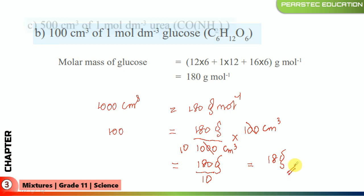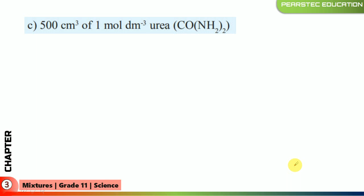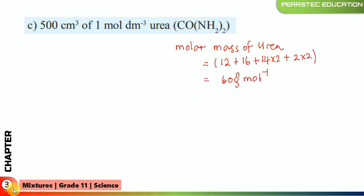The next example is 500 cubic centimeters of a 1 mol per cubic decimeter urea solution. The molar mass of urea is calculated as: carbon = 12, oxygen = 16, nitrogen = 14 × 2 = 28, hydrogen = 1 × 4 = 4. The total molar mass of urea is 60 grams per mole.